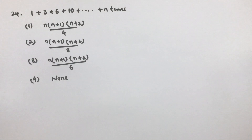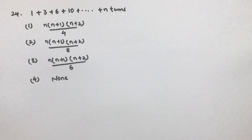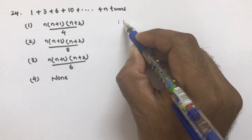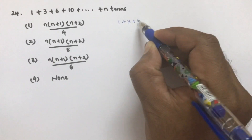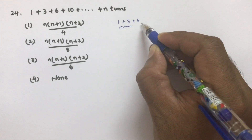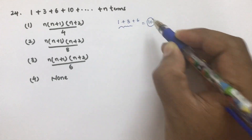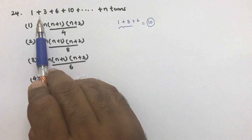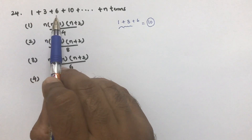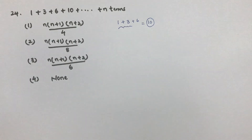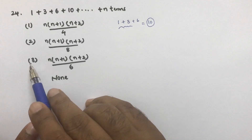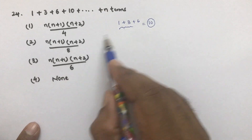Find the sum of 1+3+6+10+... to n terms — which of the following is correct? Since this series is not exactly in AP or GP, solve by trial and error. Take 3 terms: 1+3+6 = 10. Now test the third option to see if it matches.